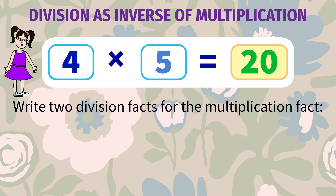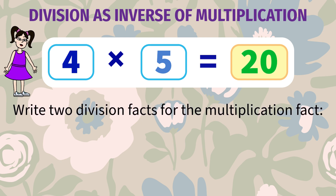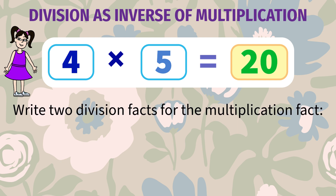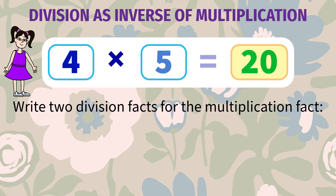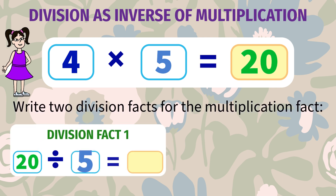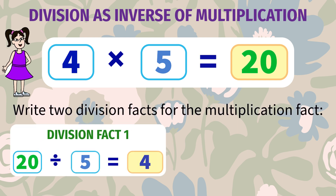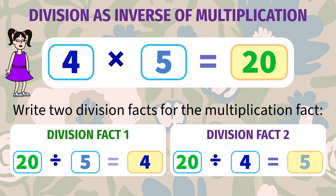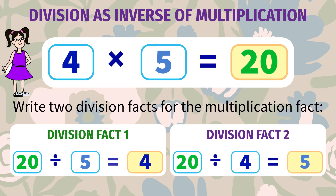And if you divide it by the multiplicand, you get the multiplier. Here, the two division facts are 20 divided by 5 is 4, and 20 divided by 4 is 5.